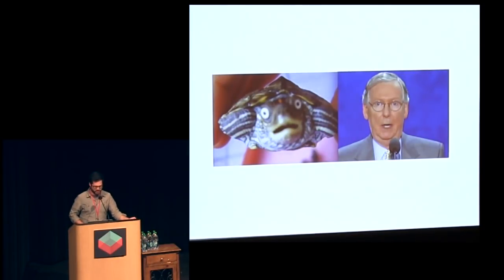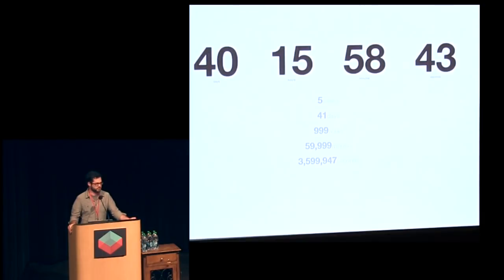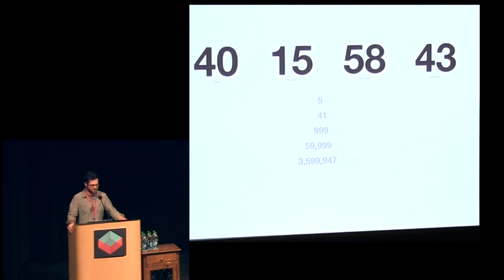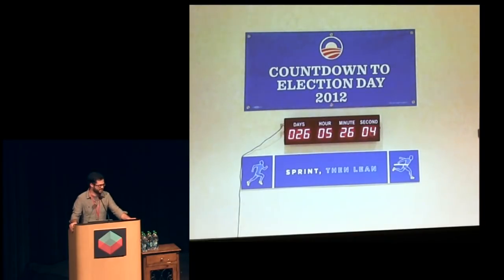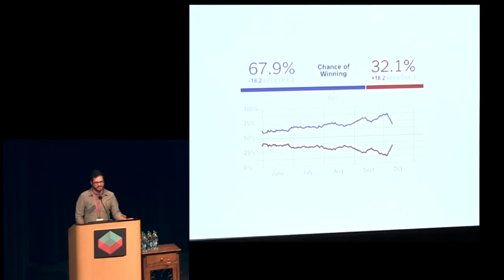I'm going to take a slight detour and talk about some of the other visualizations that were used that we didn't make. Well, this one we made but it was pretty simple — a simple countdown displayed on screens all the time, just to remind us how little time we had left down to the second. This was posted in the lobby. It started with just the countdown and the numbers, and then maybe at 40 days out they added 'sprint, then lean' — as if you could sprint for 40 days. Although, incidentally, we did work 40 days straight for those last 40 days.